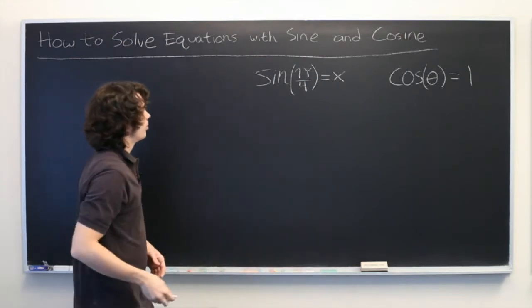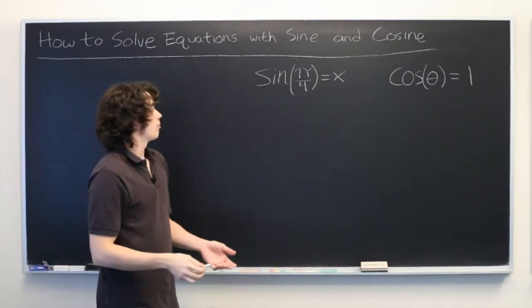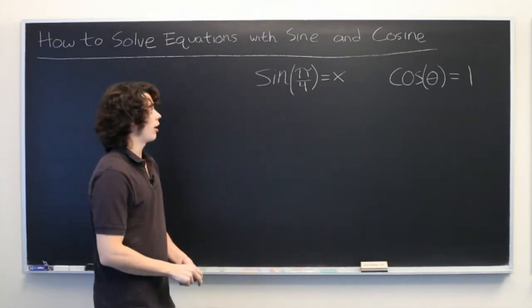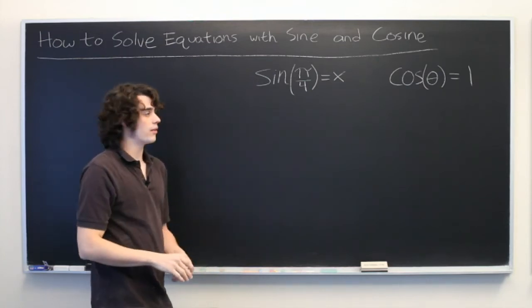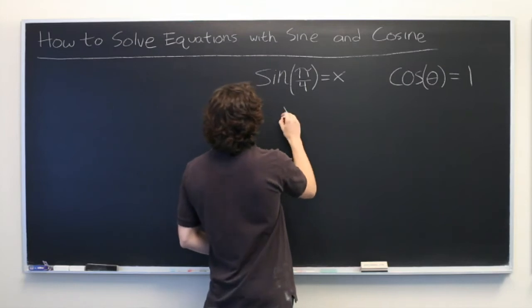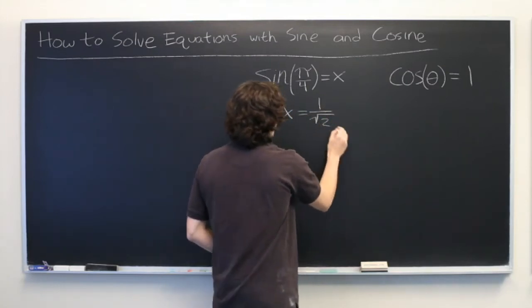The first is quite simple. All we need to know is what is the sine of pi over 4. Perhaps you have it memorized, or you can use a calculator, or you might have a chart of the unit circle with all the sine and cosine values. But however you find it, you should know that x is equal to 1 over the square root of 2.